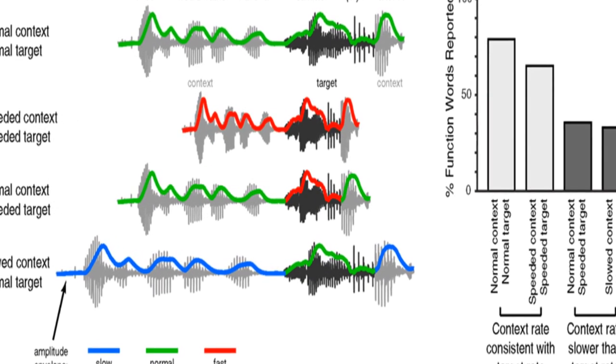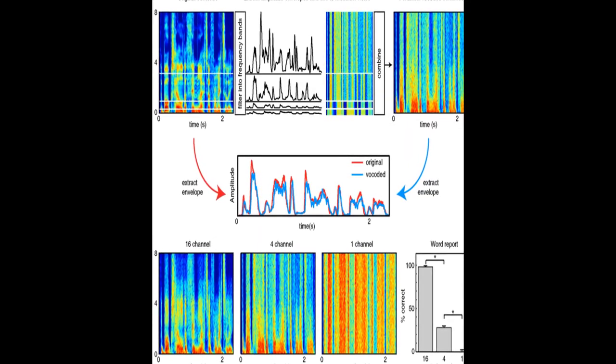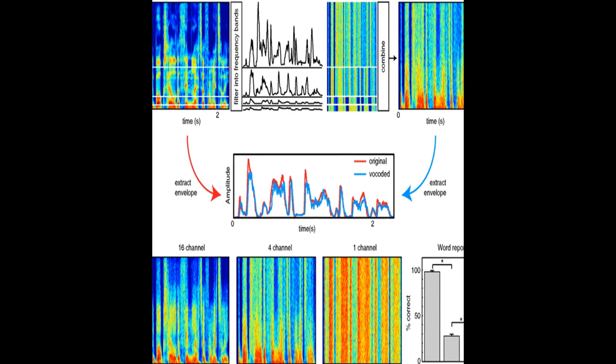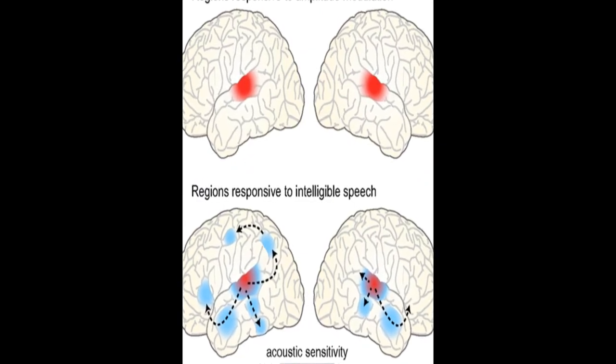It also proposes that lateral anterior temporal cortex functions in a domain-general fashion to support ongoing memory and integration of meaningful input, forming the foundation of a rhythmic hierarchy supporting spoken language.